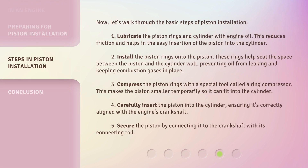Now, let's walk through the basic steps of piston installation. Step 1: Lubricate the piston rings and cylinder with engine oil. This reduces friction and helps in the easy insertion of the piston into the cylinder. Step 2: Install the piston rings onto the piston. These rings help seal the space between the piston and the cylinder wall, preventing oil from leaking and keeping combustion gases in place.